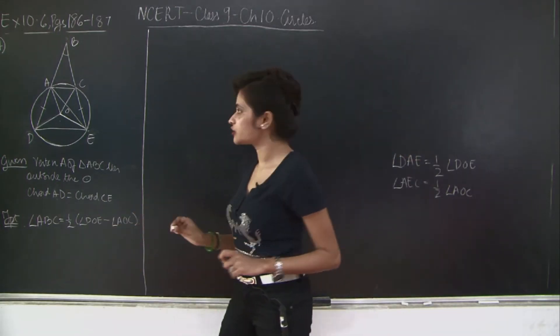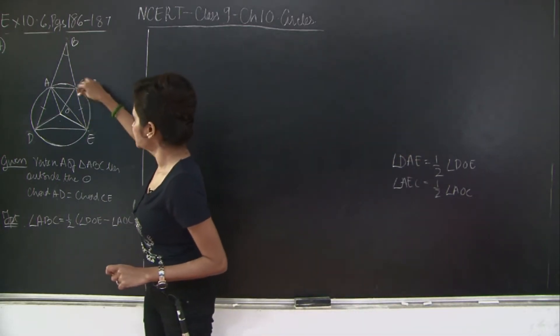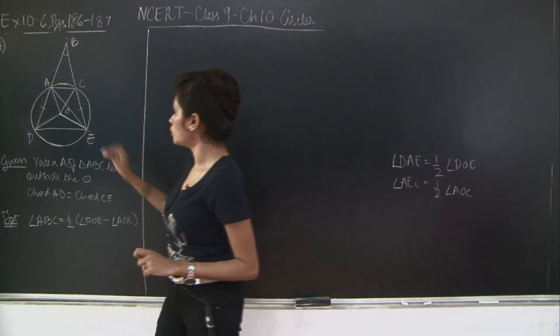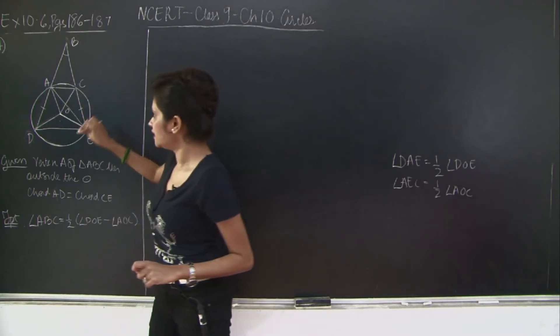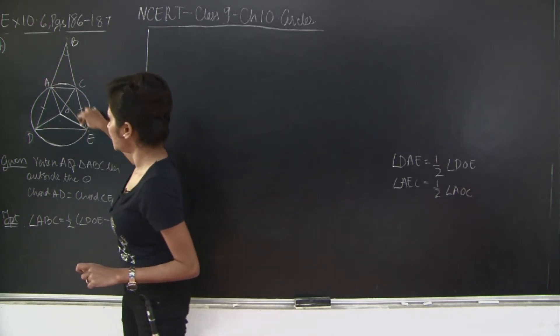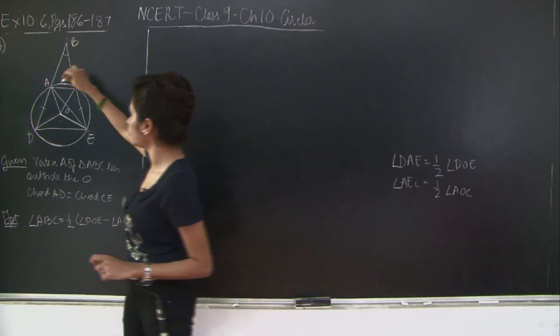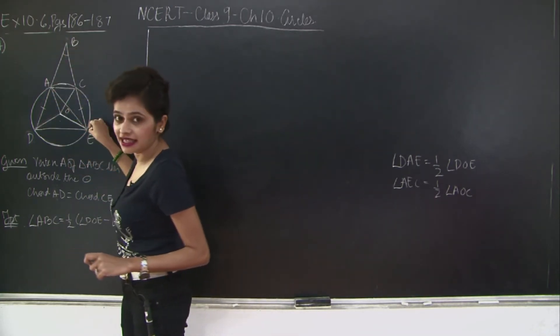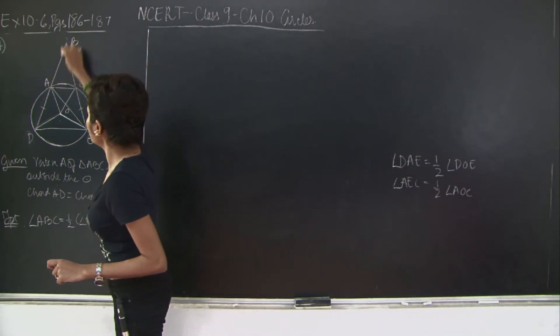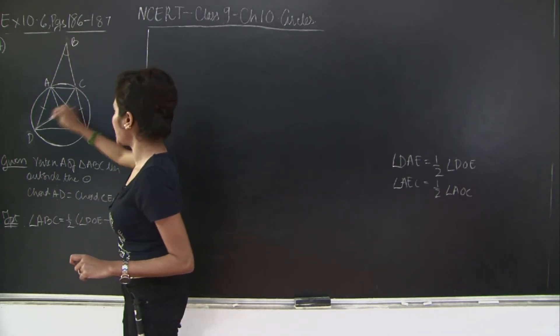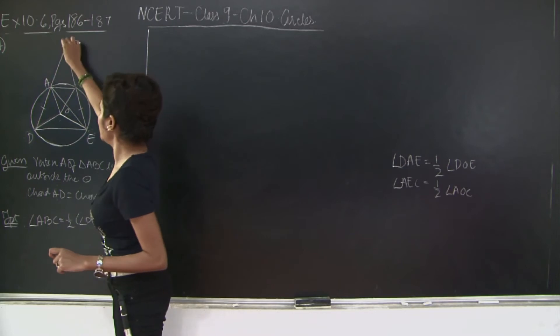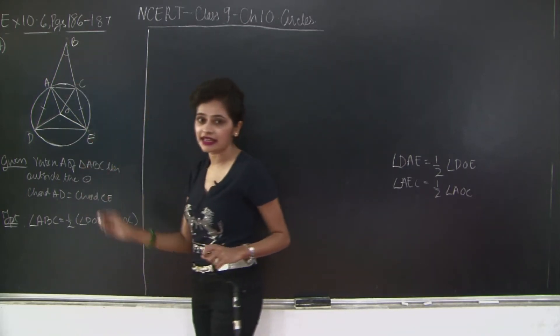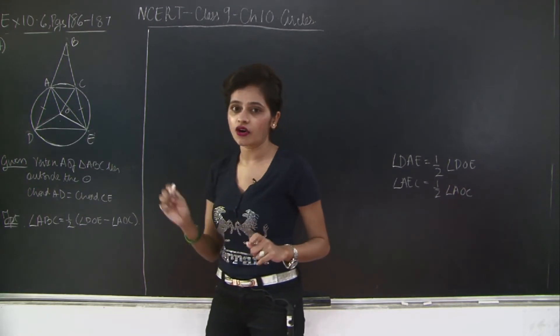So now which angles do you have? AEC, AOC, and DOE and DAE. Now take a look. Angle DAE is the exterior angle of triangle ABE. Therefore, angle DAE is equal to ABE plus AEC, because the exterior angle is the sum of interior opposite angles.